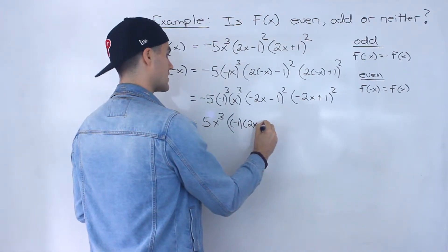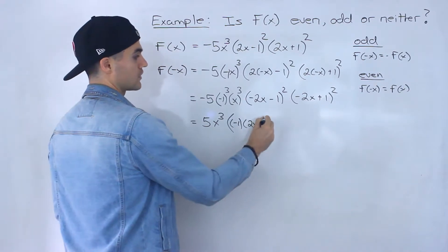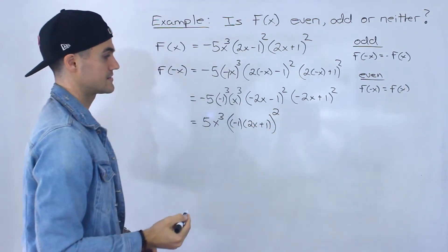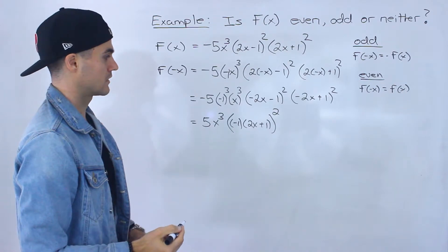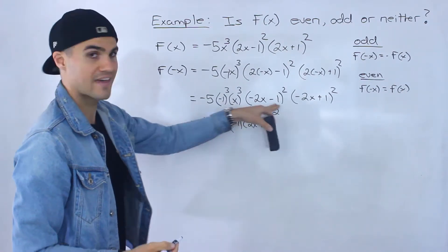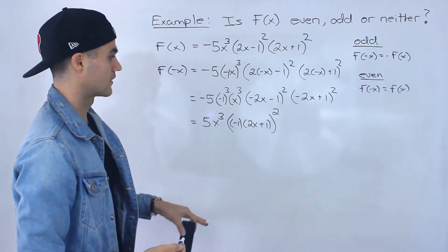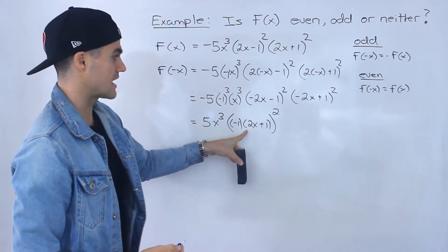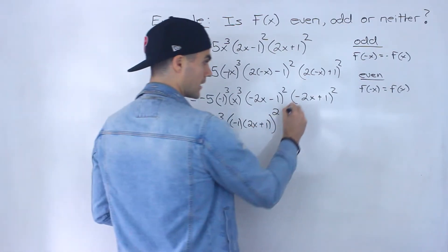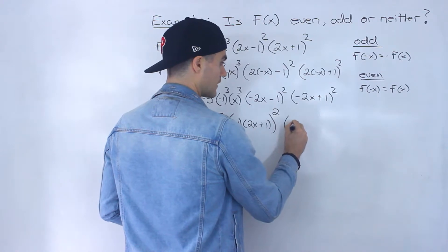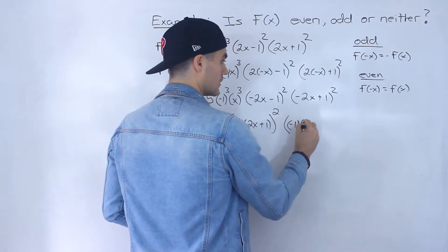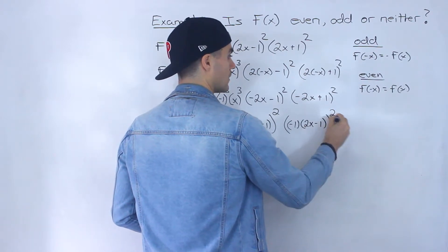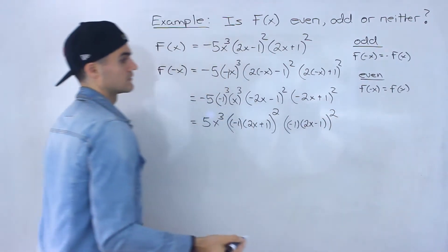So I factor out the negative 1 and all the signs change, giving 2x plus 1, and all of that is still squared. That's what's different about this example compared to the previous ones. Then I do the same thing for the other factor — factor out a negative 1, all the signs change, and that's still all squared.